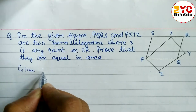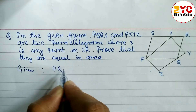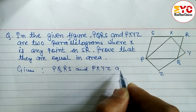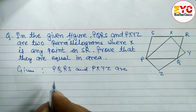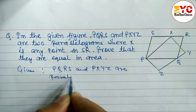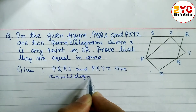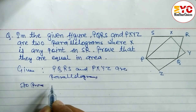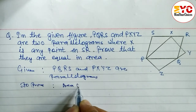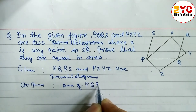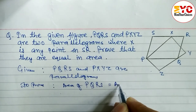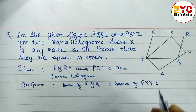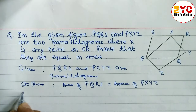First of all, we write what is given: PQRS and PXYZ are two parallelograms. What we have to prove: area of PQRS is equal to area of PXYZ — we have to show both areas are equal. Now, construction.